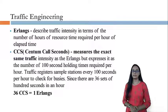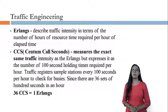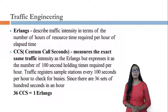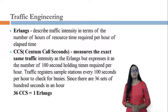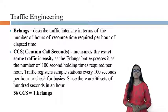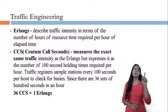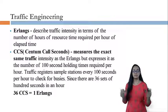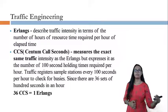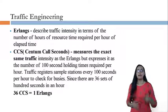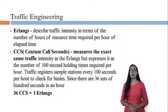CCS, or Centum Call Seconds, measures the same traffic intensity as Erlangs but expresses it as the number of 100-second holding times required per hour. Traffic registers sample stations every 100 seconds per hour to check for busy states. Since there are 36 sets of 100 seconds in an hour, 36 CCS equals 1 Erlang. Both Erlang and CCS are units of traffic intensity.